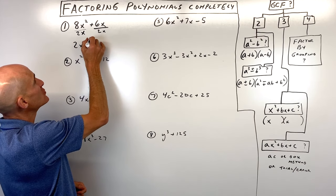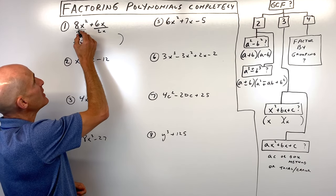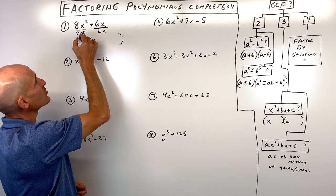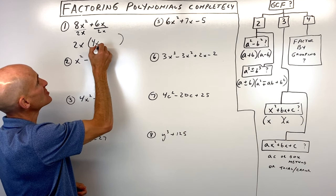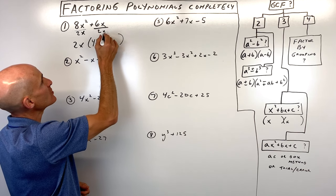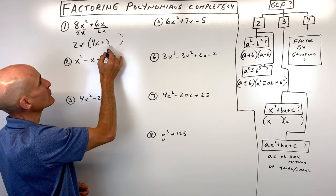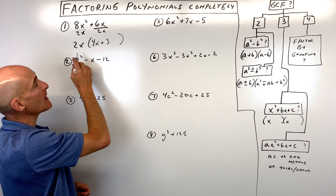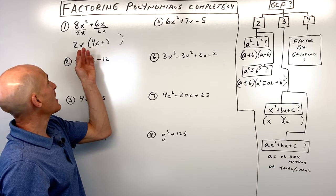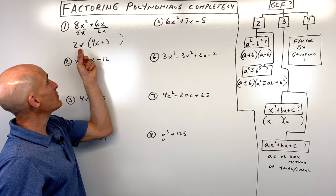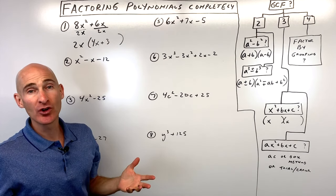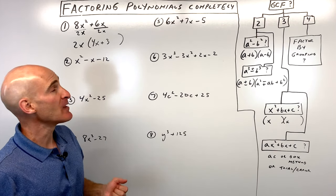The most we can divide out would be 2x. What we're going to do is put that 2x in front of the parentheses. If we divide, 8 divided by 2 is 4, x squared divided by x is just 1x, 6 divided by 2 is 3, and the x's cancel, so we're just left with 4x plus 3. The nice thing about factoring is you can always check your answer — just take that 2x, distribute it back into the parentheses, and you'll get back that original polynomial.